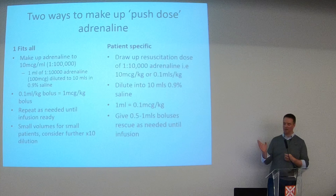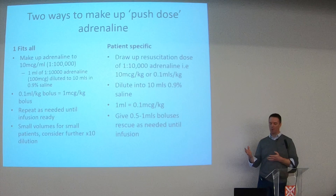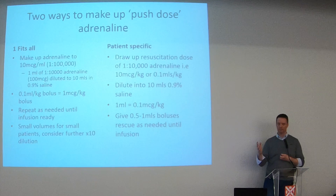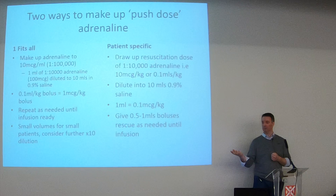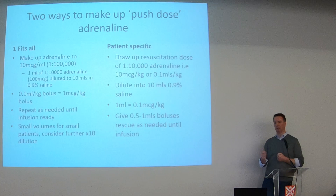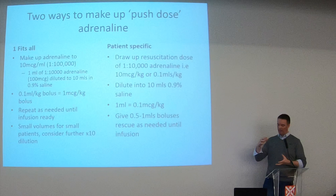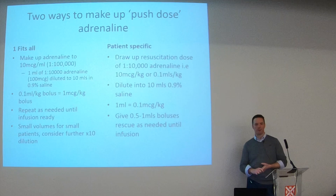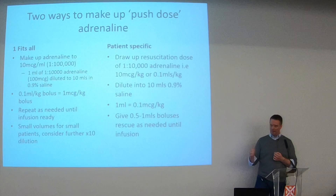Another approach - which came from cardiac theatres - is a patient-specific method. In resus you're dealing with one patient and you know their weight. Draw up the resuscitation dose for that patient using 1 in 10,000 adrenaline. For a five-kilo patient, draw 0.5 mils of 1 in 10,000, then dilute into 10 mils. One mil of that solution is one microgram per kilo for that particular patient. Give half to one mil as a bolus if the patient becomes unstable and it'll provide inotropic support while you get other measures ready.